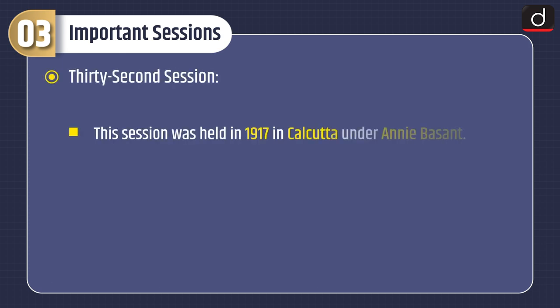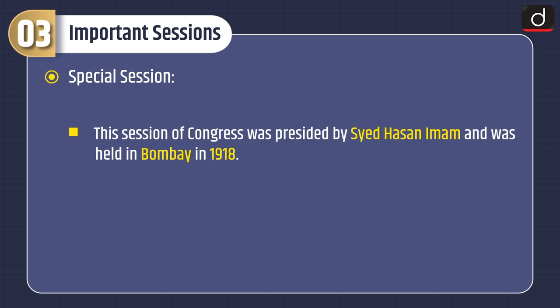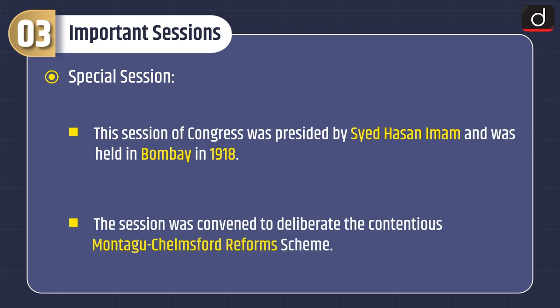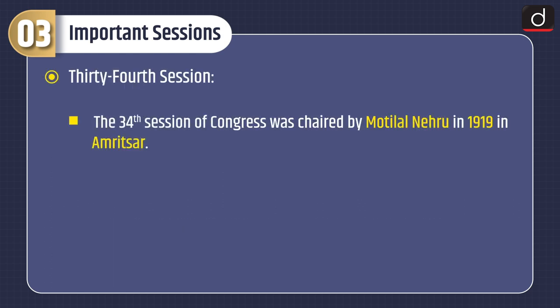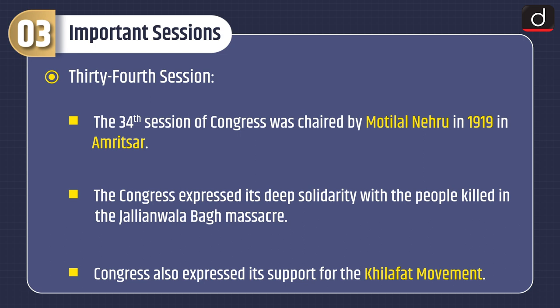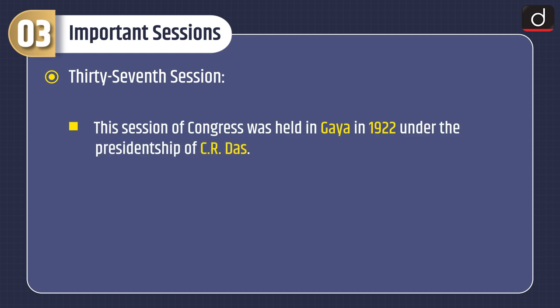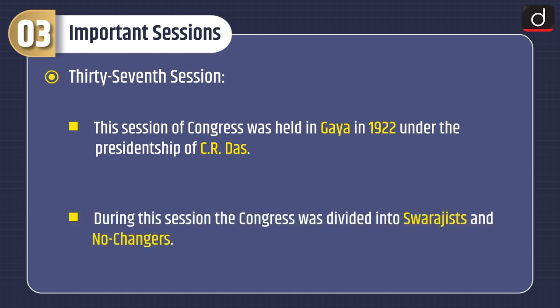Thirty-second Session: This session was held in 1917 in Calcutta under Annie Besant. Annie Besant became the first woman President of the Congress. Special Session: This session of Congress was presided by Syed Hassan Imam and was held in Bombay in 1918. The session was convened to deliberate the contentious Montague-Chelmsford reform scheme. Thirty-fourth Session: The thirty-fourth session of Congress was chaired by Motilal Nehru in 1919 in Amritsar. The Congress expressed its deep solidarity with the people killed in the Jallianwala Bagh massacre. Congress also expressed its support for the Khilafat Movement. Thirty-seventh Session: This session of Congress was held in Gaya in 1922 under the Presidentship of C.R. Das. During this session, the Congress was divided into Swarajists and no-changers.